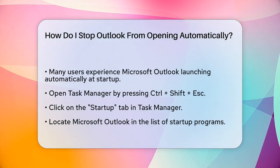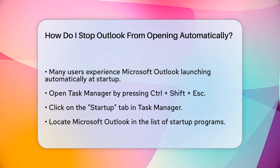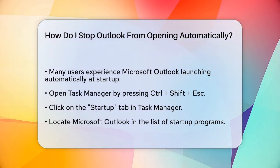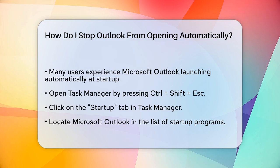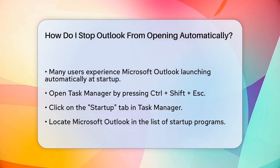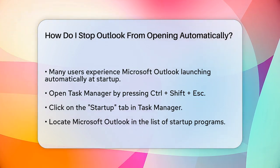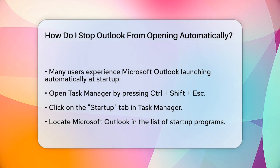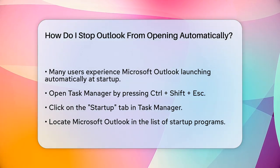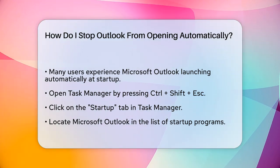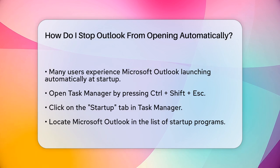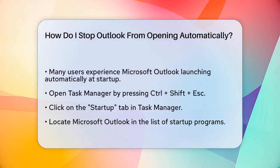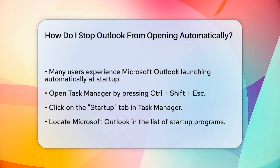First, let's check the most obvious place: the Task Manager. To do this, press Ctrl-Shift-S on your keyboard to open Task Manager. Once it's open, click on the Startup tab. Here, you'll see a list of all the programs set to start when your computer boots up. Look for Microsoft Outlook, right-click on it, and select Disable.